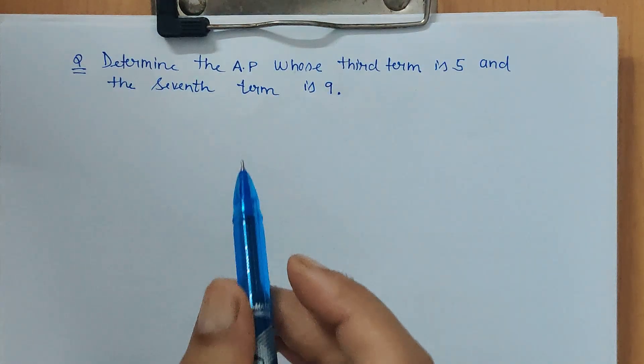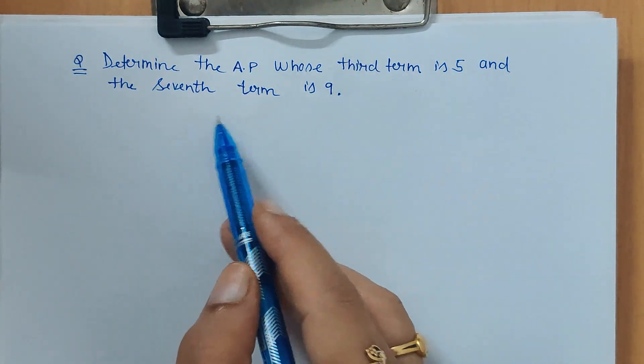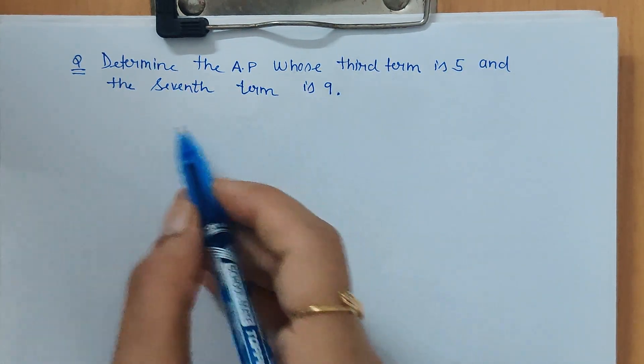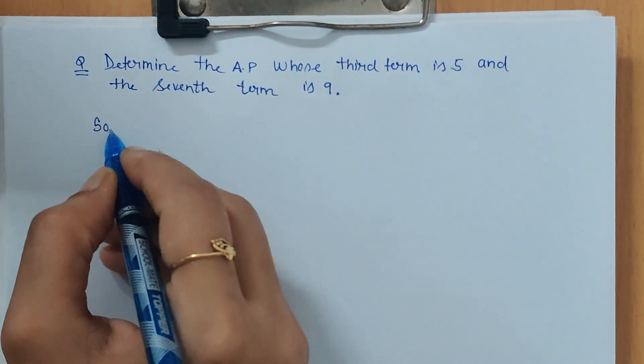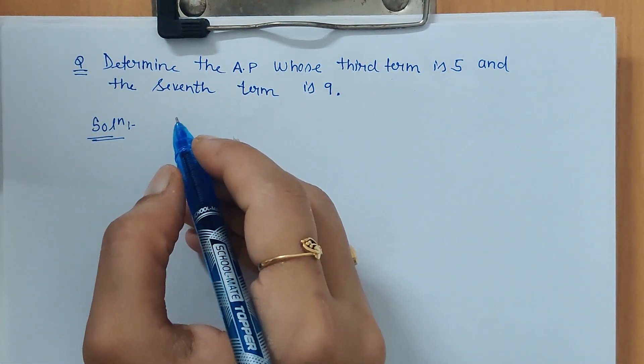Hello friends, in this video we have to determine an arithmetic progression whose third term is given to us and the seventh term is given to us. So let's write whatever is given and get the required arithmetic sequence.